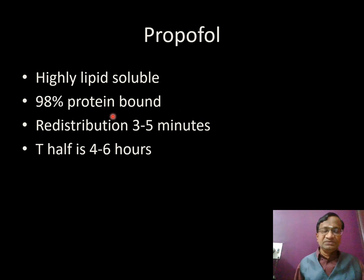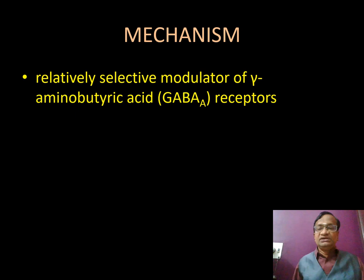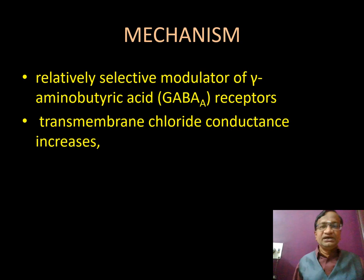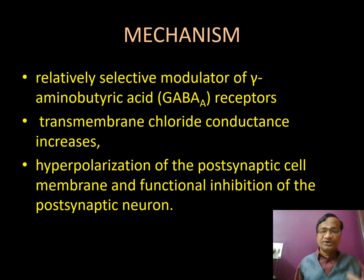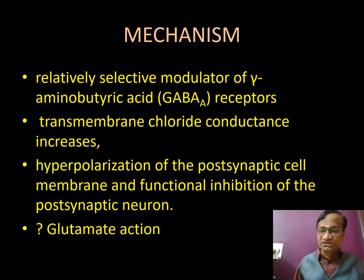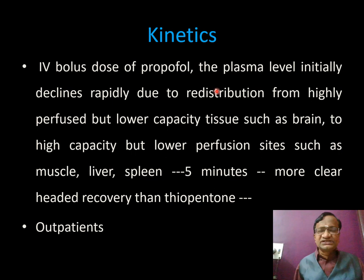Propofol is 98% protein bound; redistribution half-life is 3 to 5 minutes, and the elimination half-life is 4 to 6 hours. It is a selective modulator of GABA receptors and TALS transmembrane chloride channels, causing hyperpolarization of the postsynaptic membrane and functional inhibition of the postsynaptic neuron — similar to barbiturates. There is also some glutamate action. Unlike ketamine, which is an NMDA antagonist, propofol works primarily via GABA.